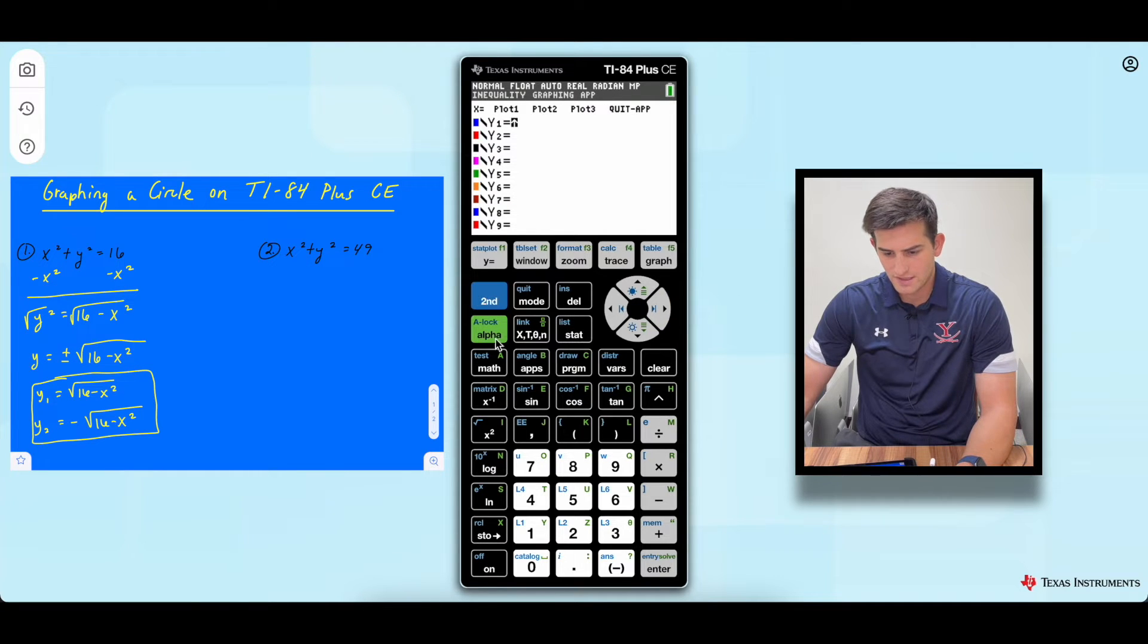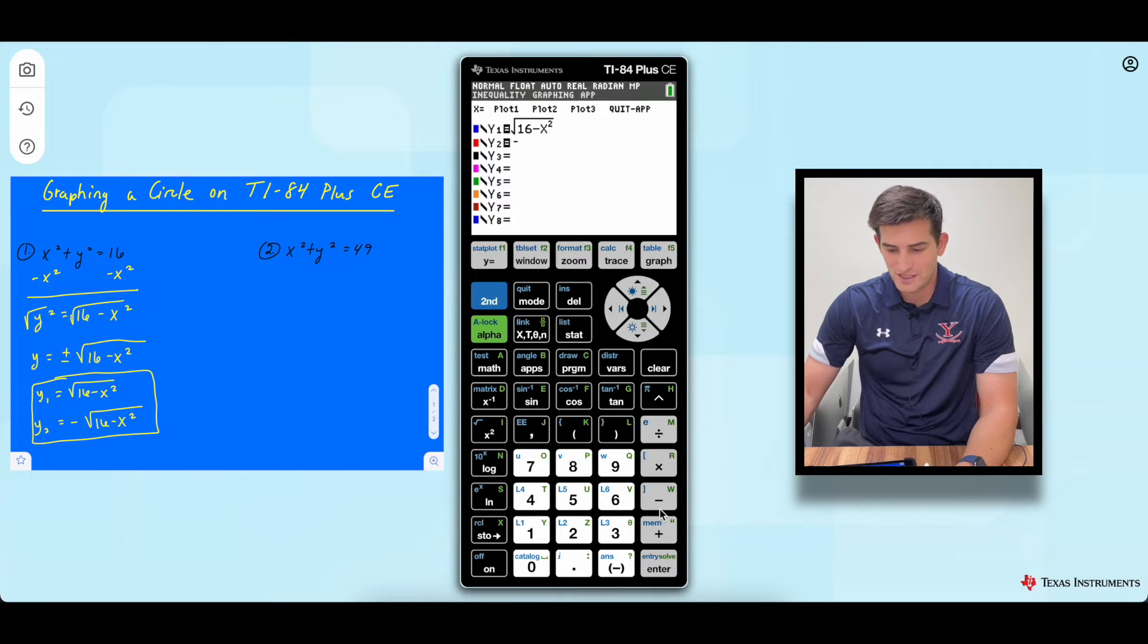So we're going to do second square root, 16 minus x squared. And then we're going to go down to y2 and now we're going to do negative. Remember, this is negative, not this button. This is subtraction. They'll give us an error if we choose that one.